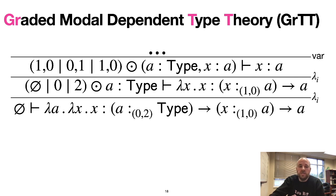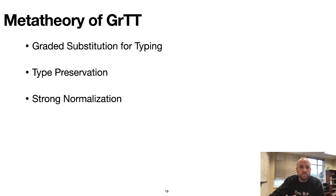So that's GRTT in a nutshell. Please check out the paper for the rest of the details. To ensure we have a well-defined system, we proved a few metatheoretic properties, namely graded substitution for typing, which is perhaps the most important property for graded type systems. In addition, we proved type preservation and strong normalization. The latter is proved using reducibility candidates. Again, for the details, please check out the paper.